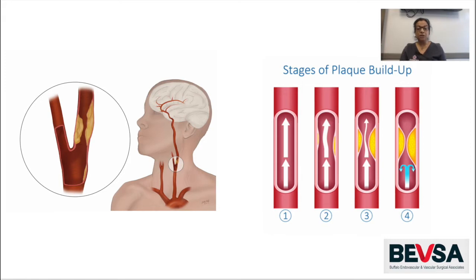In addition, plaque buildup in the carotid arteries can break off and travel to the brain, causing either a TIA or a stroke. That is when it is called symptomatic. But again, most of the time, it is asymptomatic.